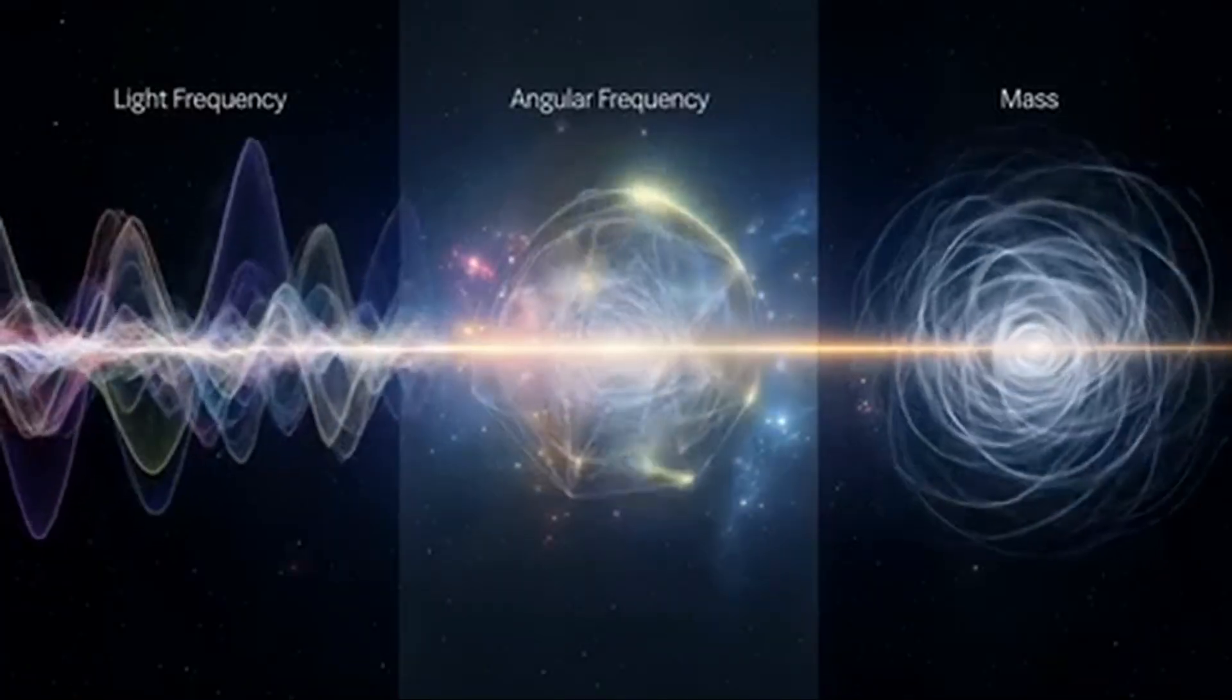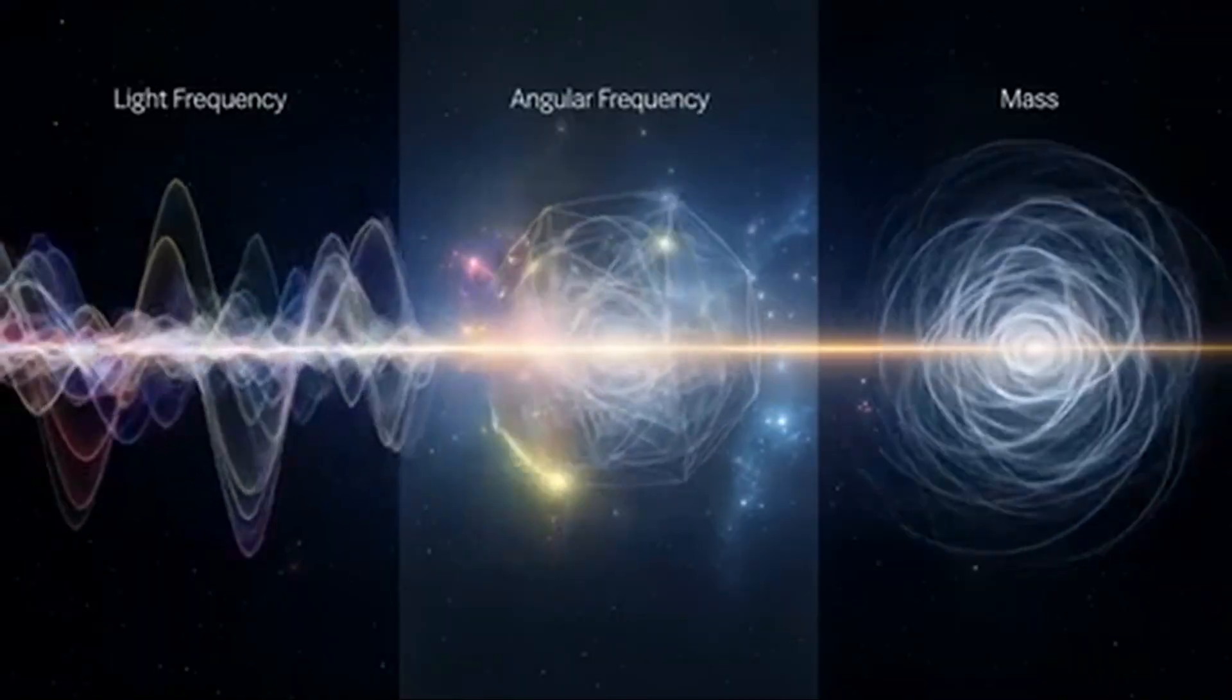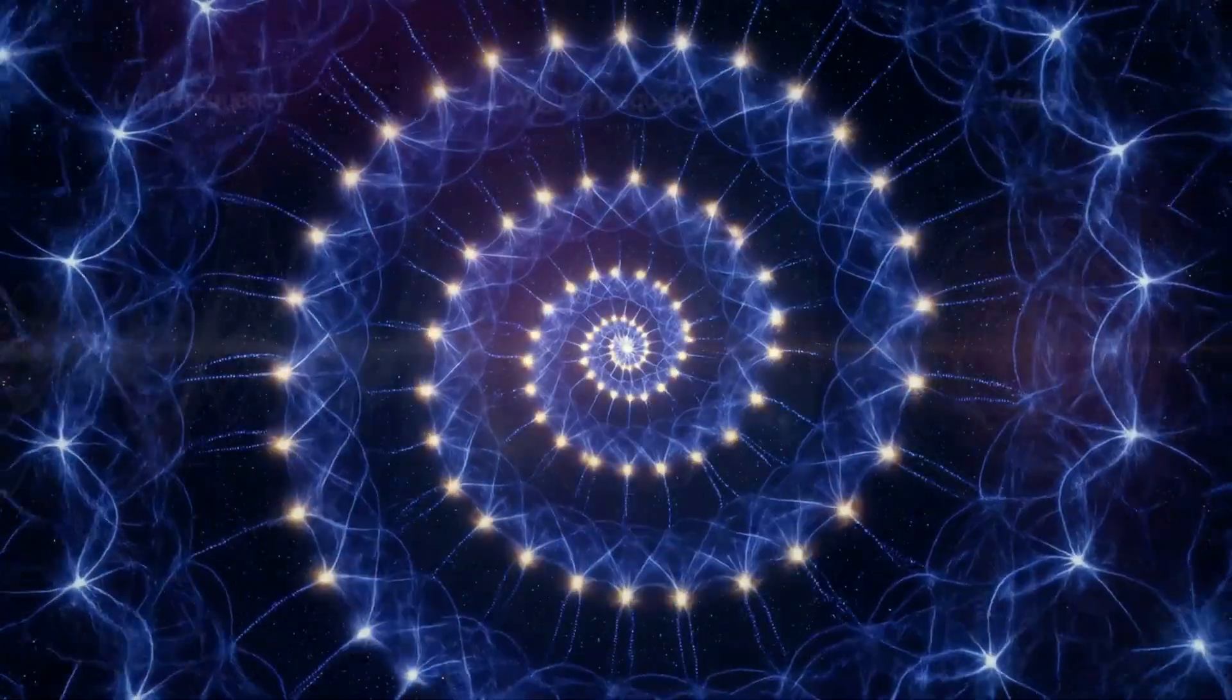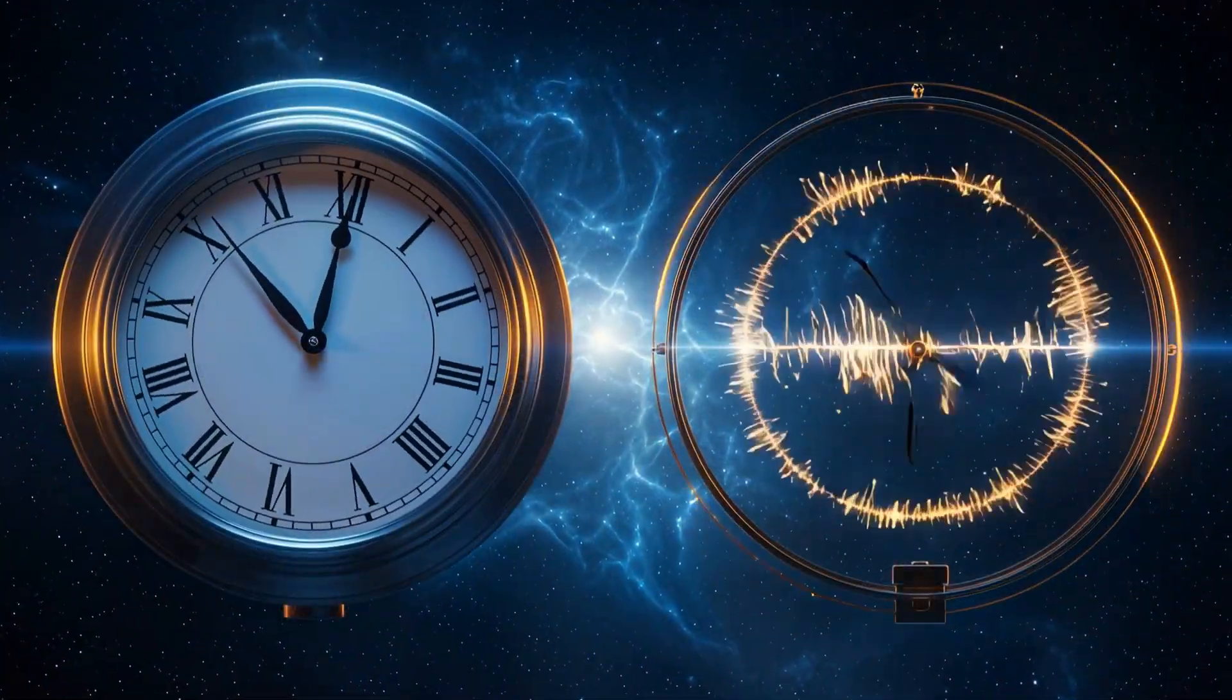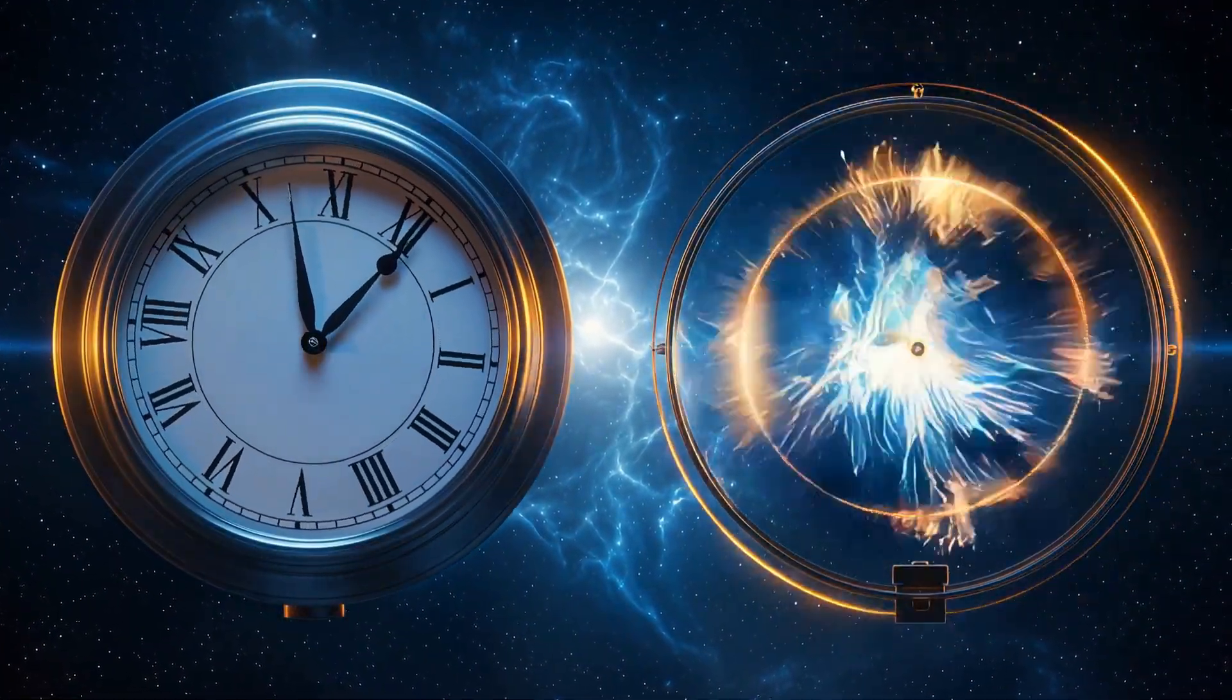When light spins and projects outward, its energy is measured by frequency. When light spins within, that same energy is defined by angular frequency. One clock turns through space. The other through information.